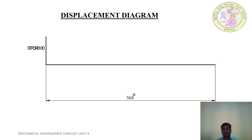Draw the displacement diagram for Simple Harmonic Motion and also for Uniform Acceleration and Retardation motion. First, draw a horizontal line of 360 degrees, because a complete rotation of the cam is 360 degrees. Take a suitable scale.